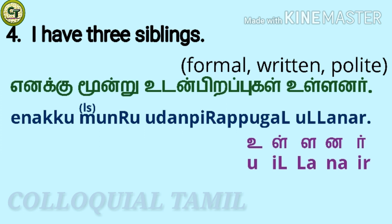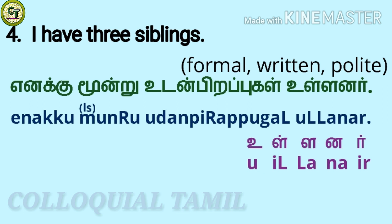This is in formal form, which is also the written form and the polite form. For 'Ullanar': U is a short vowel, U is a consonant, L is a short vowel letter, N is a short vowel letter, U is a consonant. Together: Ullanar.